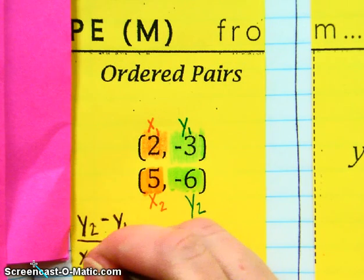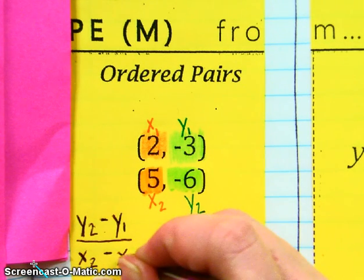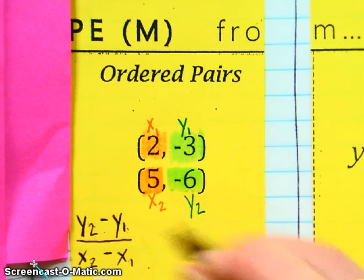Notice that it's from the same ordered pair there, and X minus X sub 1. These are from the same ordered pair.